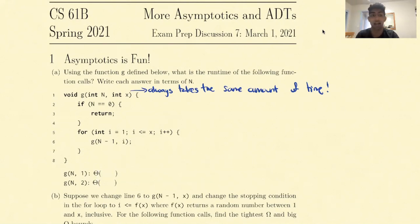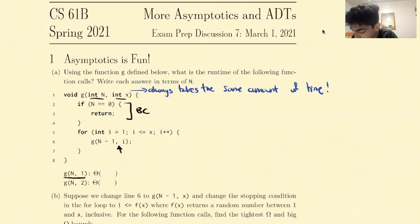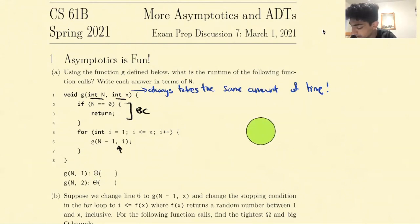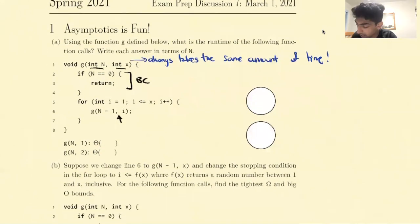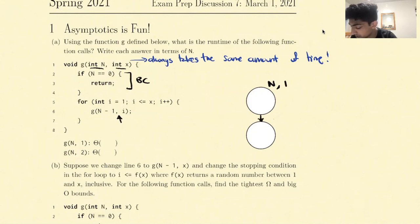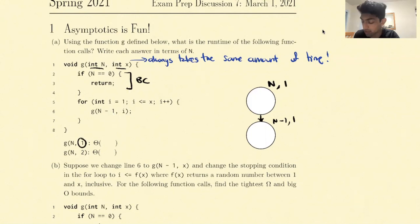Diving into this question, we see that we have the function g that takes in two arguments n and x. Then we have a simple base case, and then we issue a bunch of recursive calls. So when we call g(n, 1), what we will notice is that we will get the following tree structure. The first time we call the function, the input size is n, and the value of x is going to be 1.